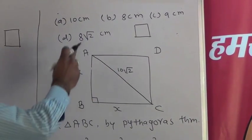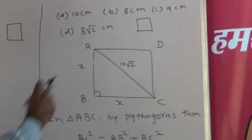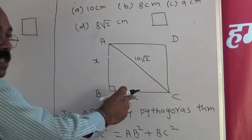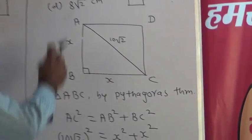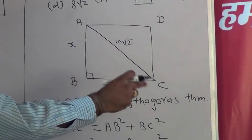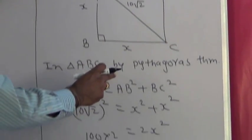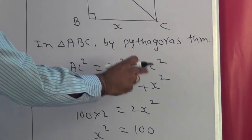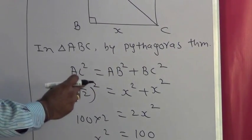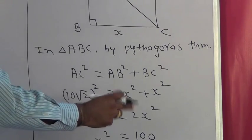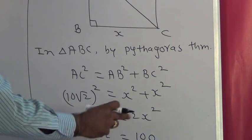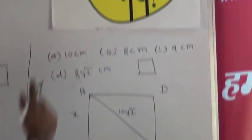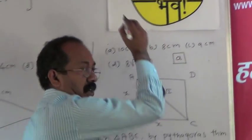ABCD is the square drawn, AC is the diagonal, AB = BC = x. In triangle ABC, by Pythagoras theorem, AC² = AB² + BC², so (10√2)² = x² + x². Solving, we get x = 10. So AB = 10 cm. Alternative A represents 10 cm, so A is the correct alternative.